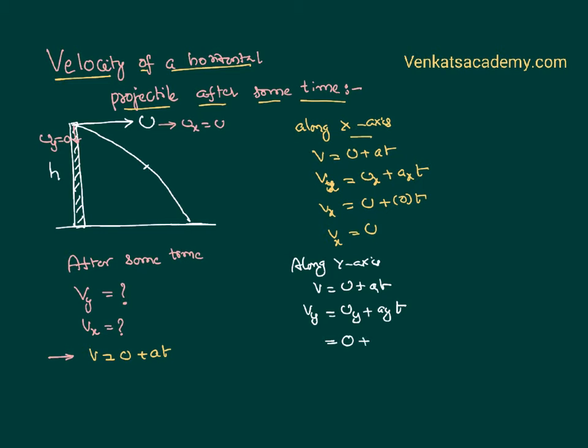There is no initial velocity along y direction. ay is acceleration due to gravity, +g, because it acts along the direction of motion and increases velocity. Therefore, Vy = gt.